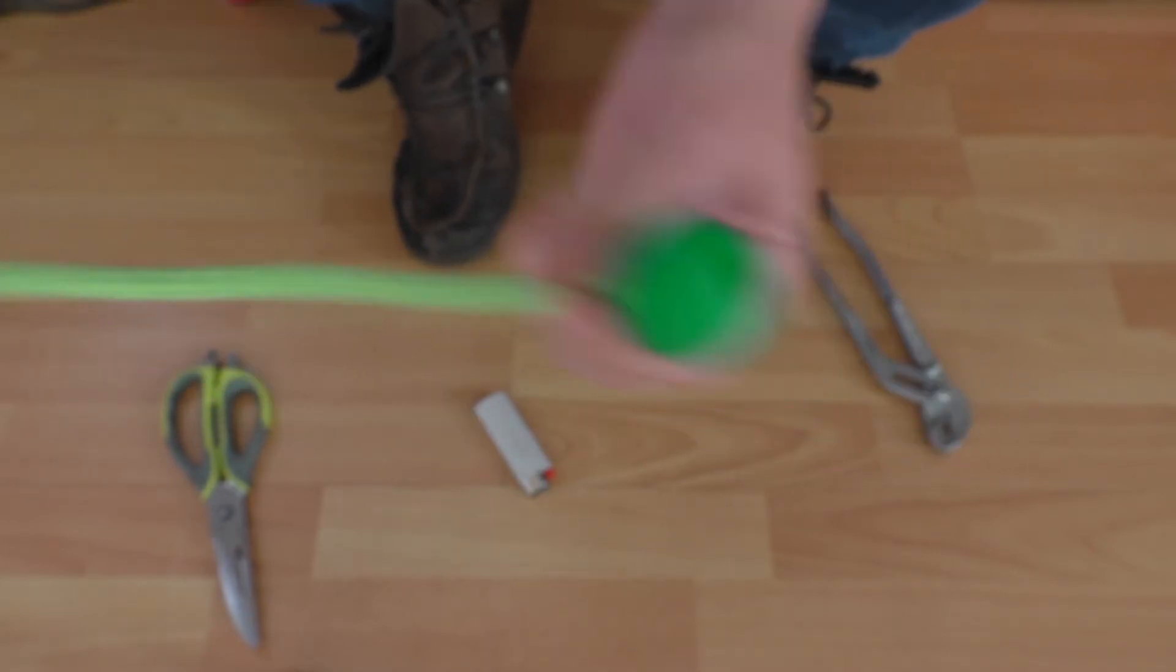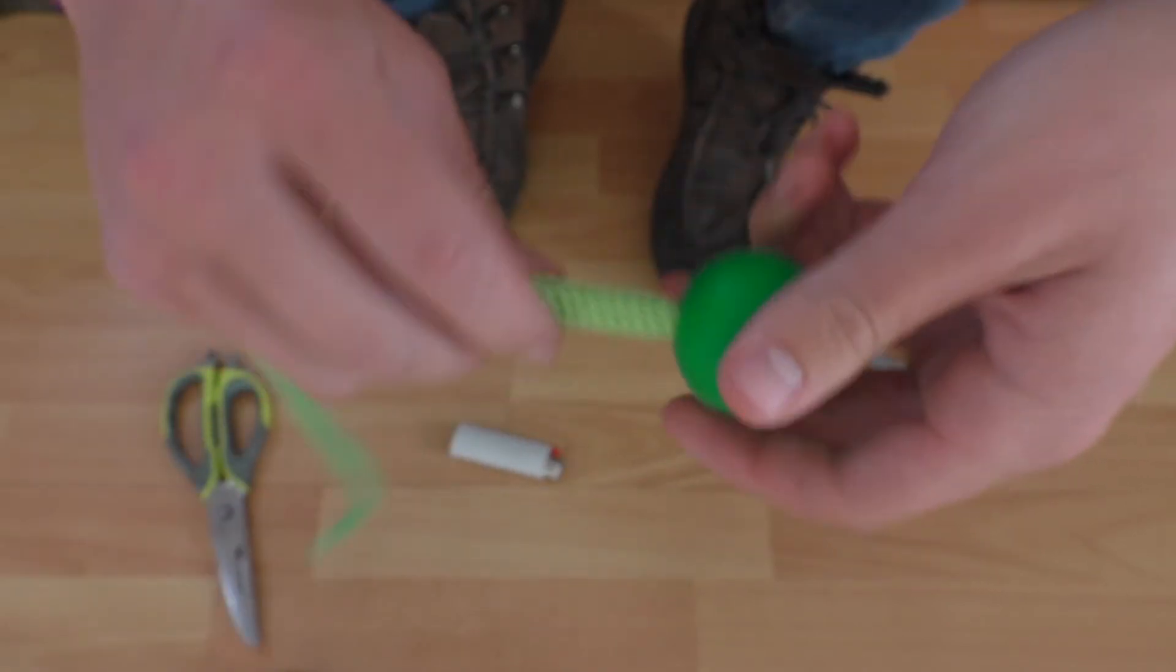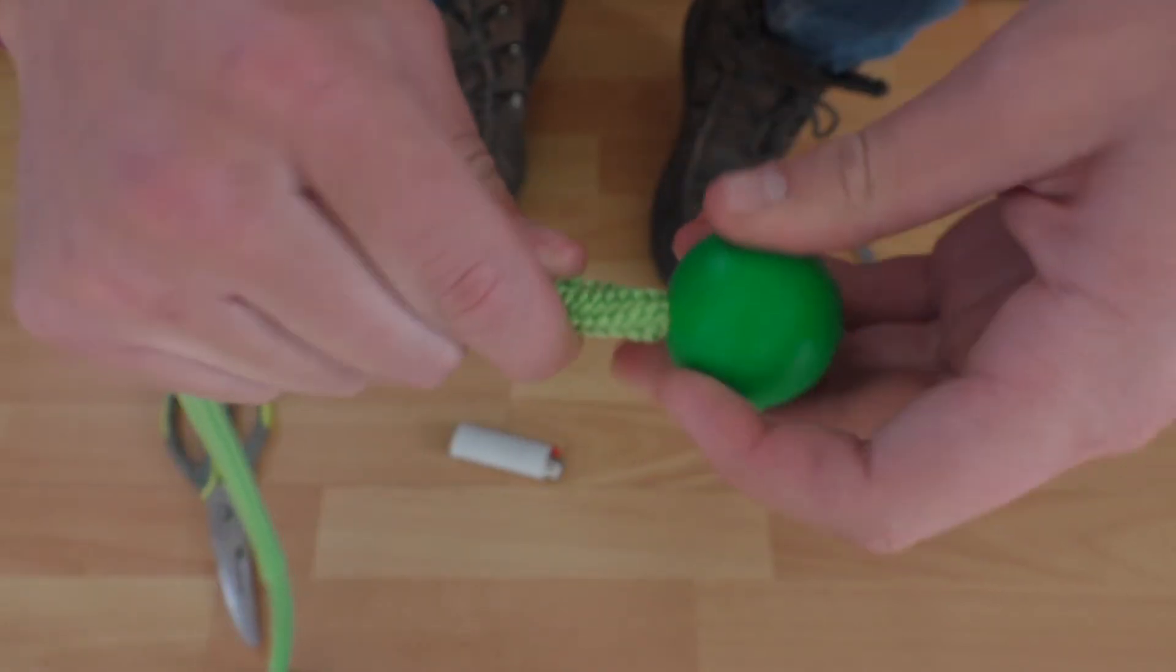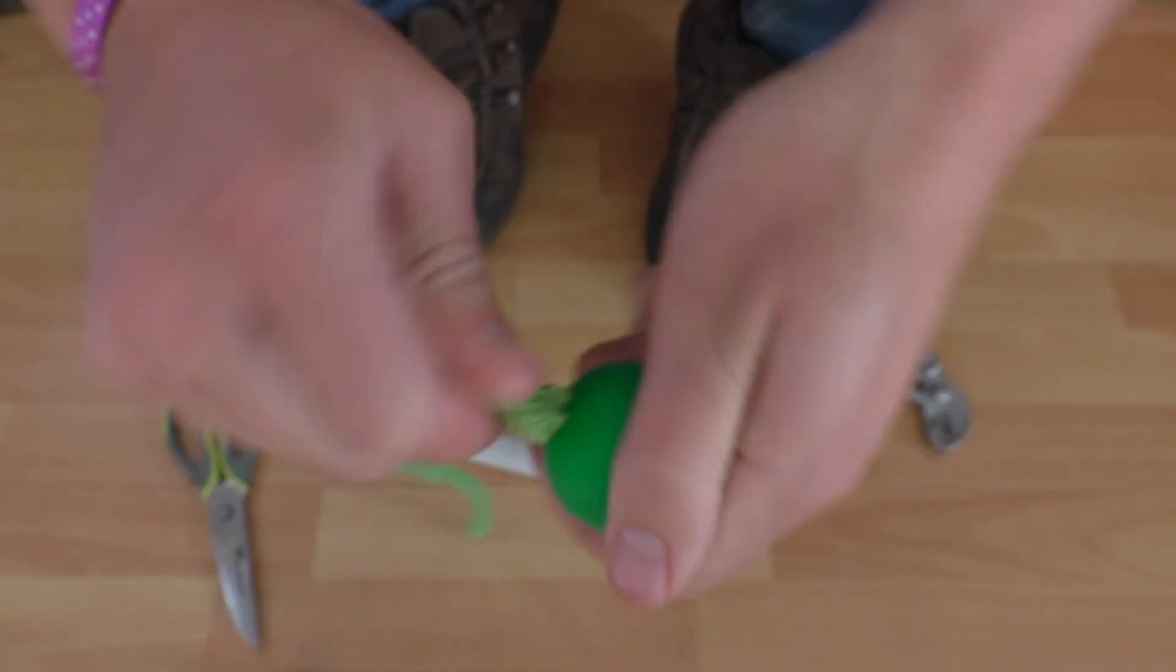And there you have it. That's how you adjust your poi length. So if you want to get it out, best thing to do is to take this, twist and push. So you twist and push, and twist and push.